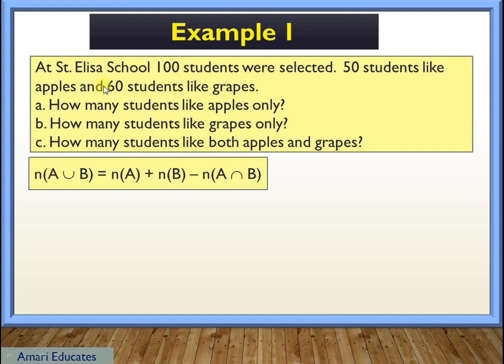For the A, it represents the apple, and for the B, it represents the grapes. Now, let's have those values. So the union of A and B, which are the population that we're considering, is 100. And for those who like apple, we have 50. For those who like grapes, we have 60. This one is the missing part, which is their intersection.